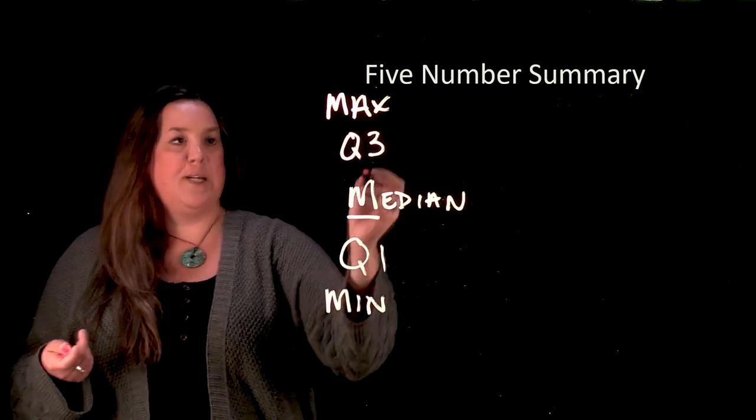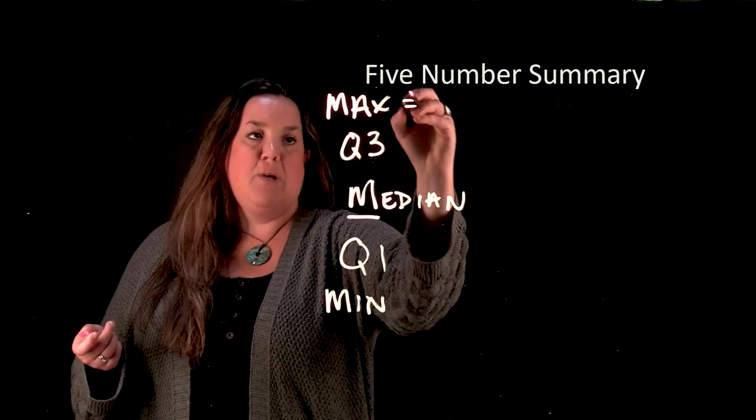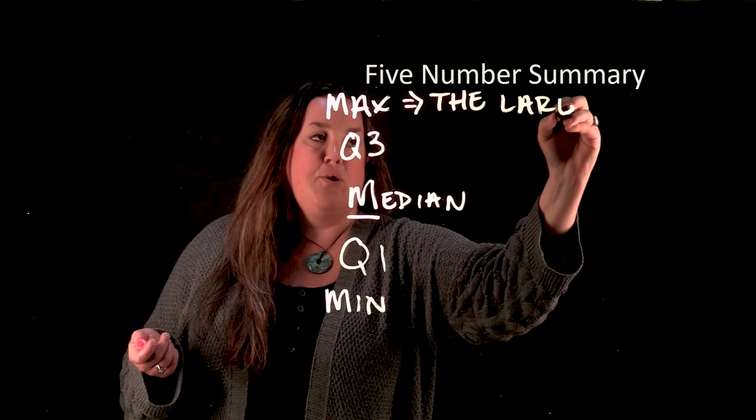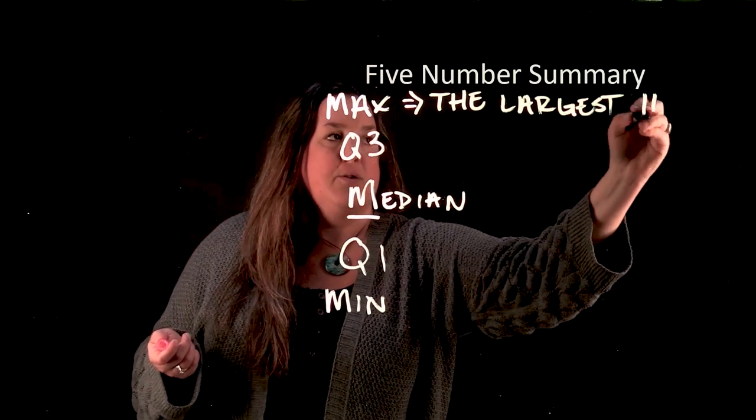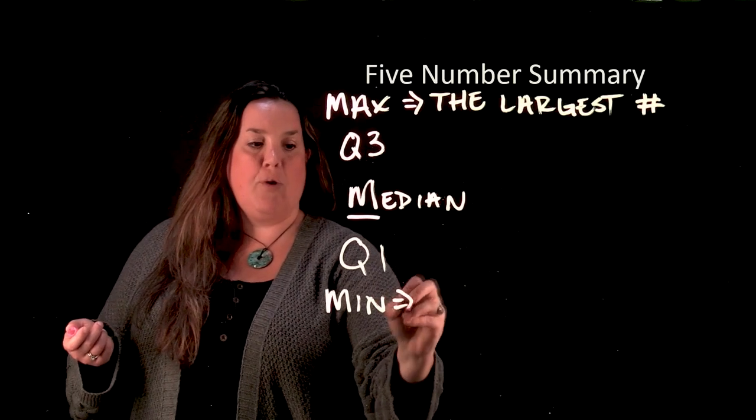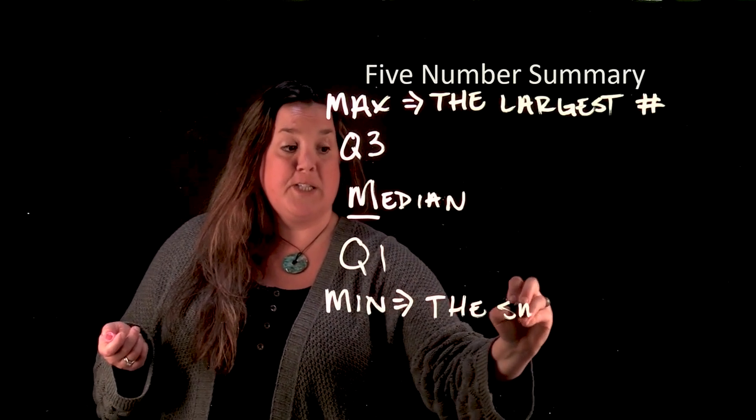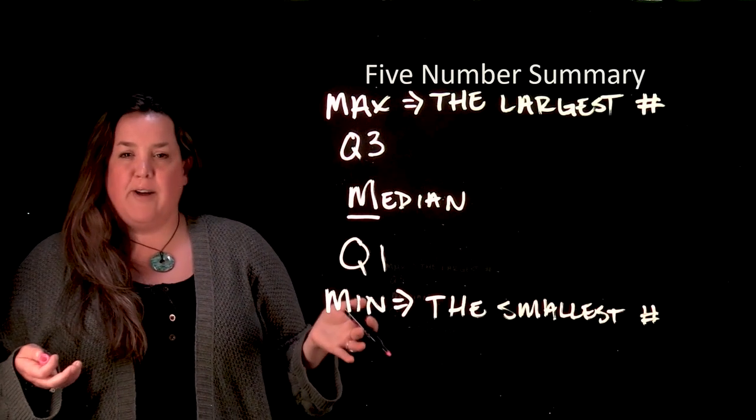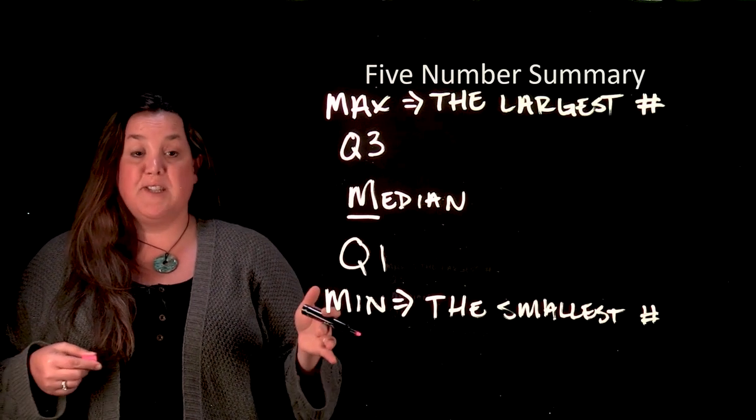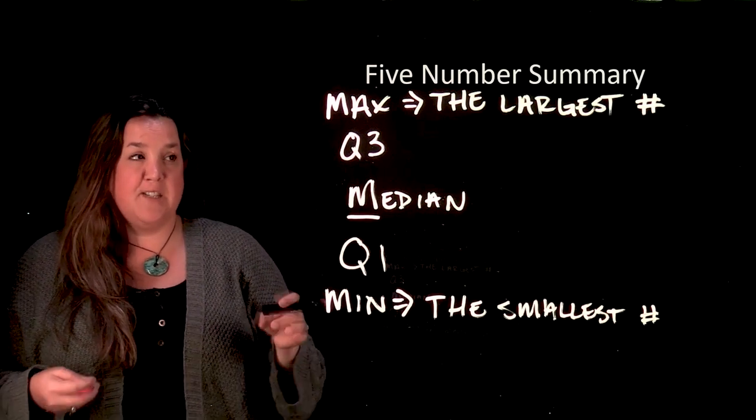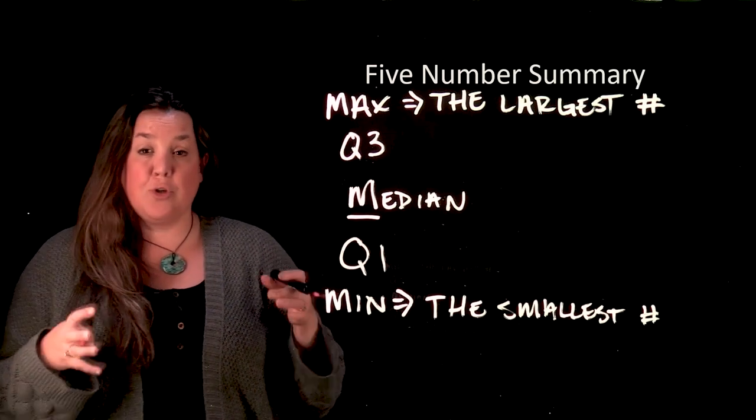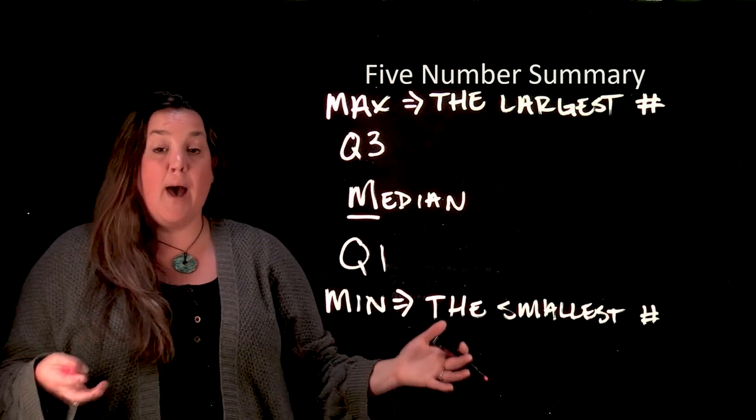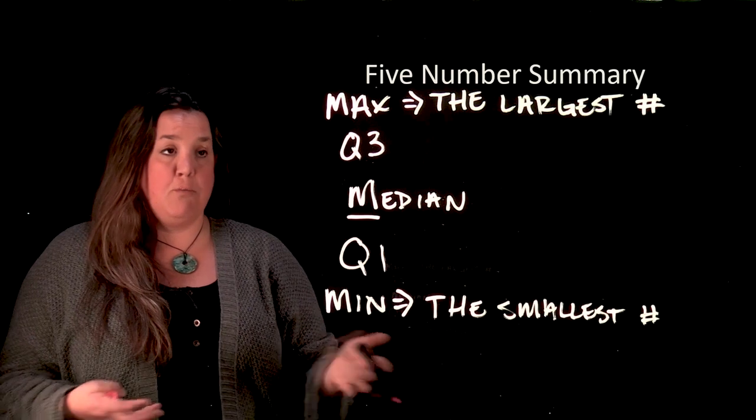Now the maximum and minimum don't really need to have a definition because it's pretty obvious, but this is going to be the largest value in the data set. So we'll say the largest number, and this is going to be the smallest number in the data set. Now notice that there's no qualifiers on that. It is the largest or the smallest. Sometimes people get confused when they see these things called outliers and they think that they shouldn't include them, but that's not true. It is either the smallest or the largest. So if you have outliers, most likely one of them will be either the minimum or the maximum.